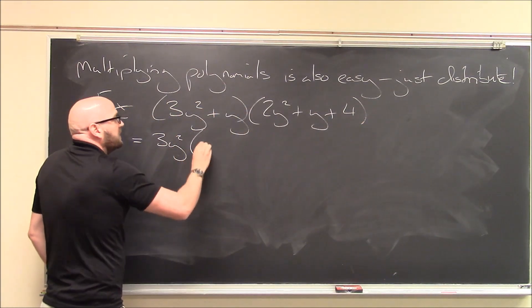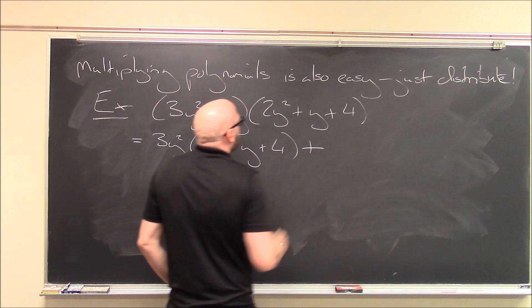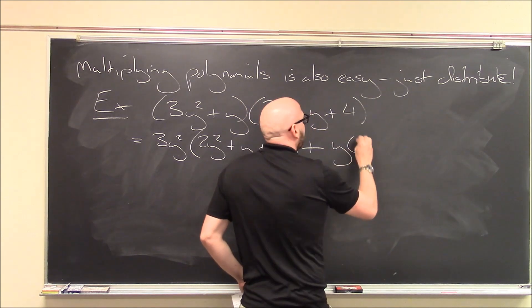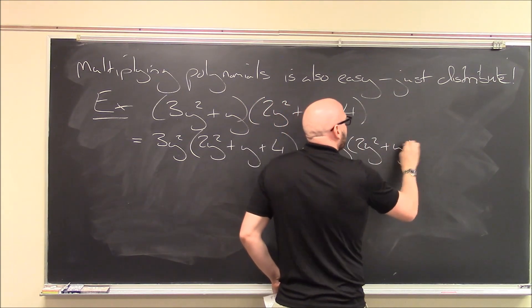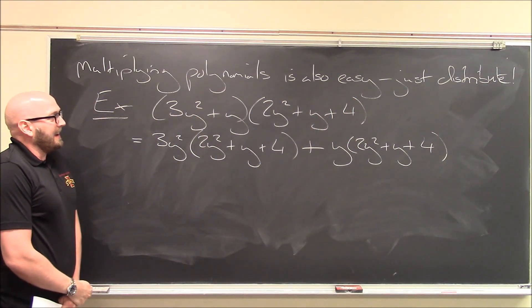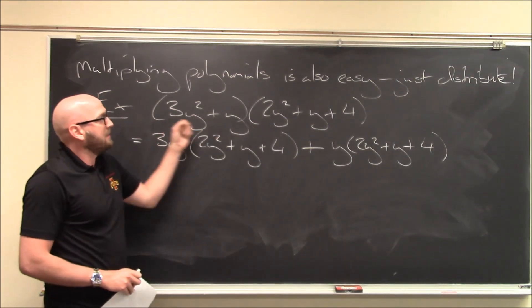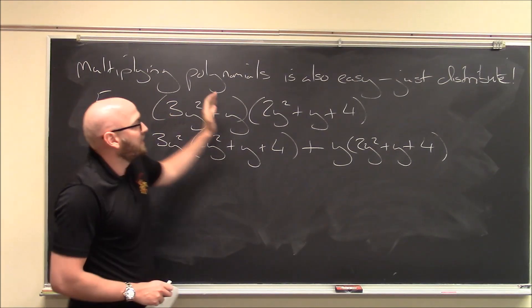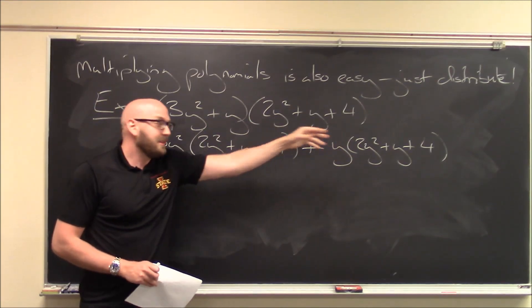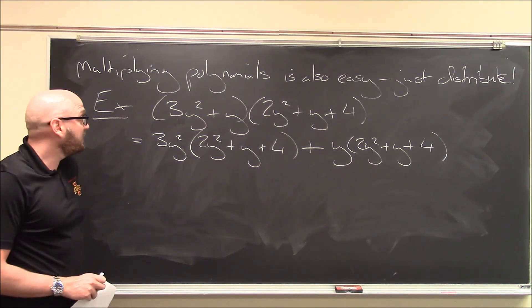All right, what this really means is I've got 3y squared times this entire polynomial. All right, so I'm going to write it out fully. It's 3y squared times 2y squared plus y plus 4. Plus, I've also got y times this entire polynomial. So, plus y times this entire polynomial, 2y squared plus y plus 4. And that's all of the heavy lifting. That's what you have to understand. What do I mean by distribute? I mean, well, when I'm doing one polynomial times another, I really mean all of the terms. The first term times the entire polynomial. The second term times the entire polynomial. If I had three terms, I would have the third term times the entire polynomial.